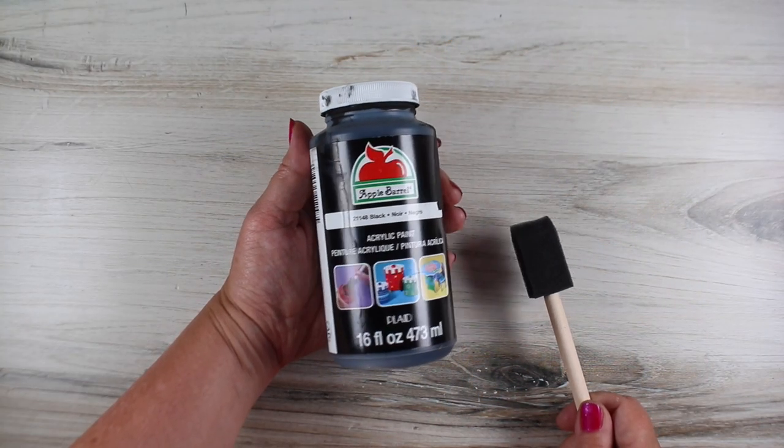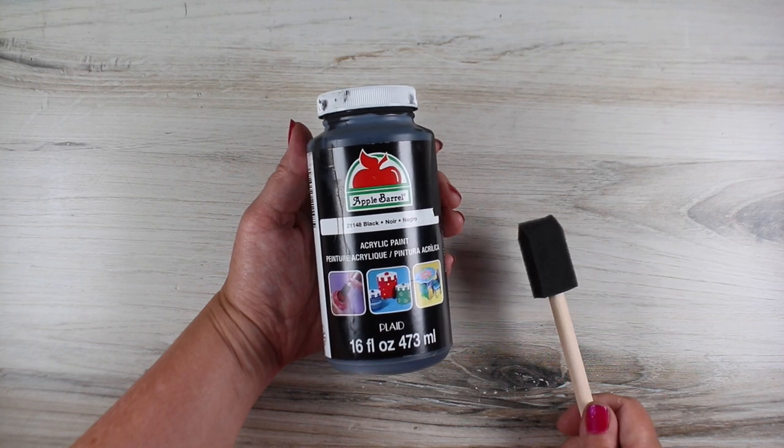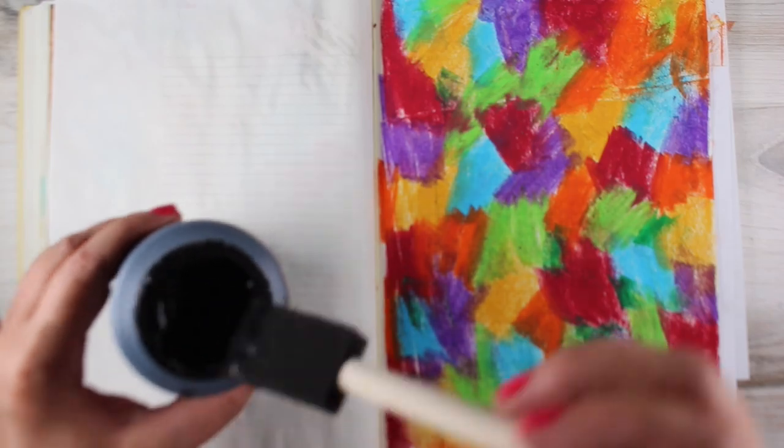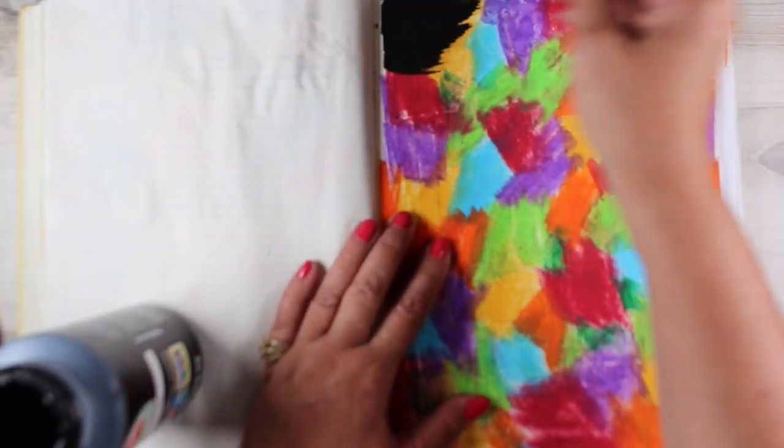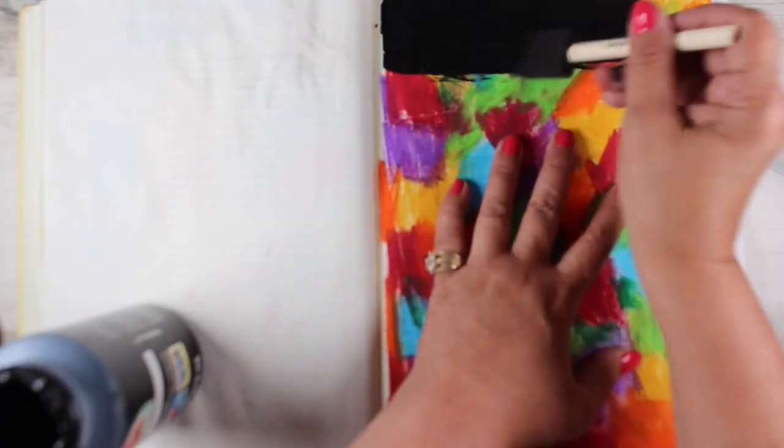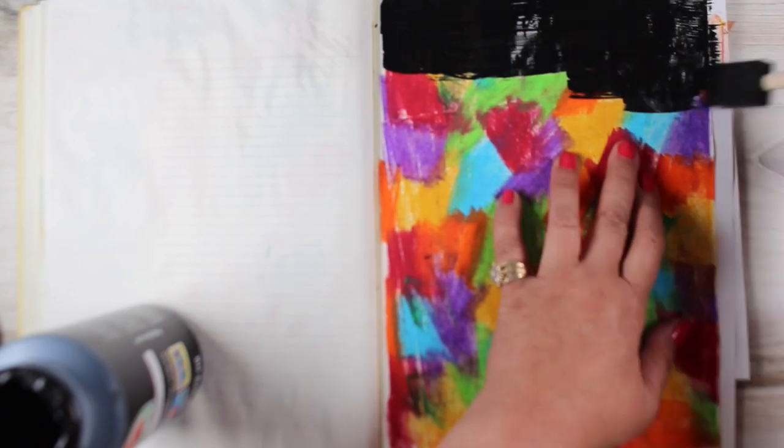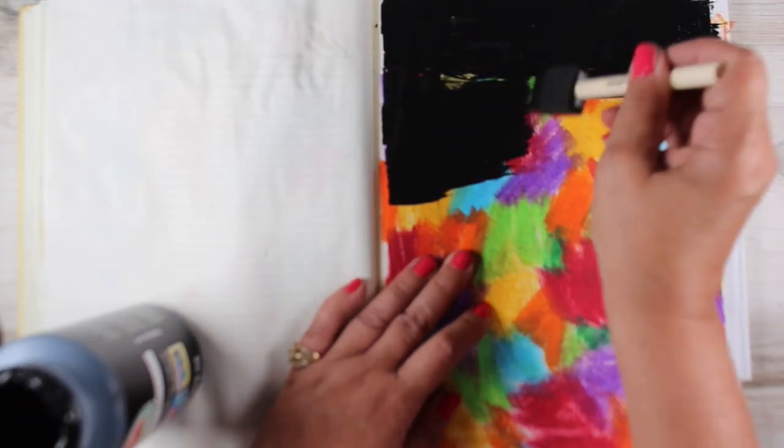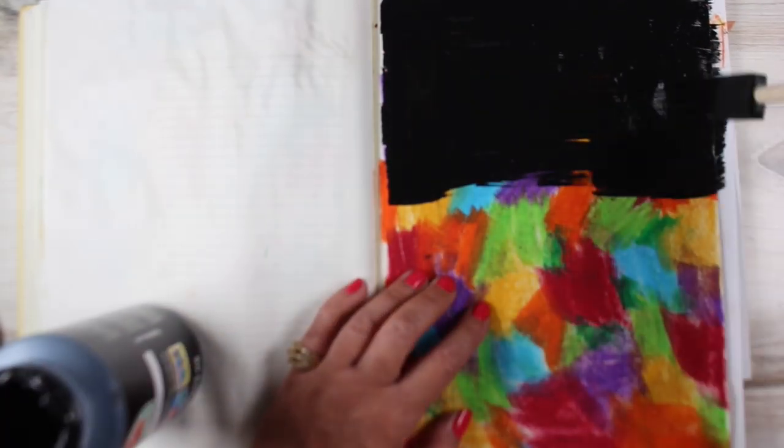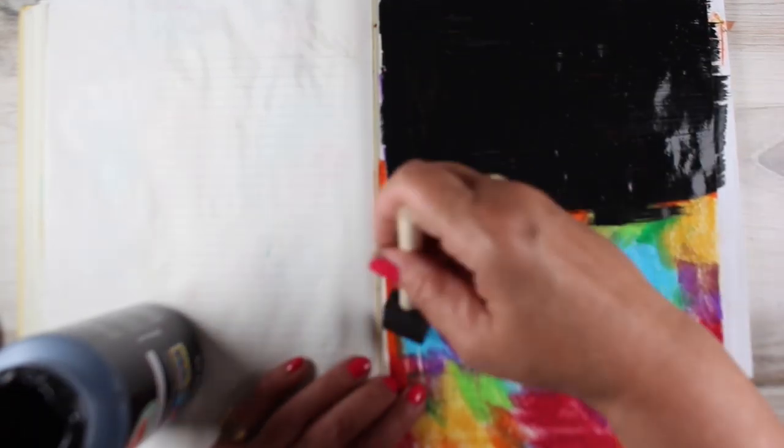Once it was all covered with the oil pastel, I painted on this apple barrel black paint. I tried a whole bunch of different paints when I was prepping for VBS, and this one worked the best. I looked online for a million recommendations, tried a bunch of them, and this one was definitely the one that worked best.